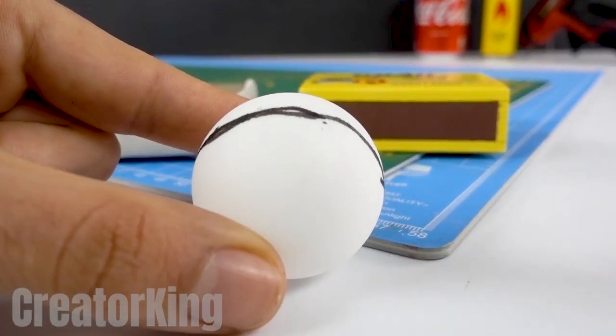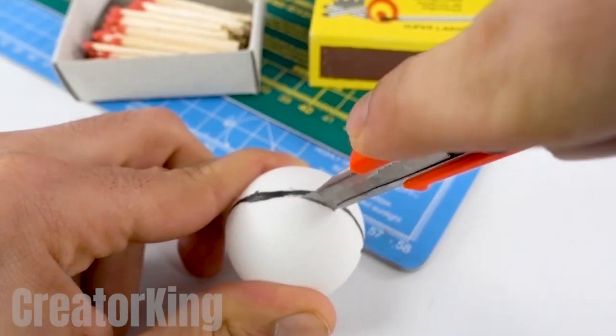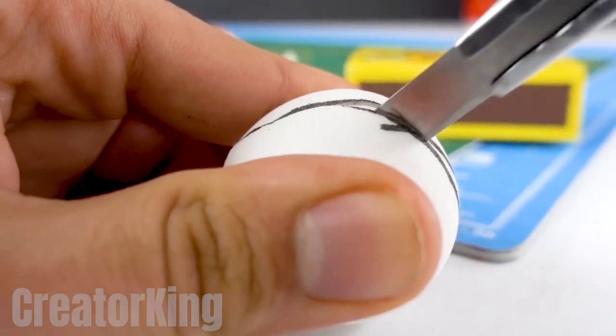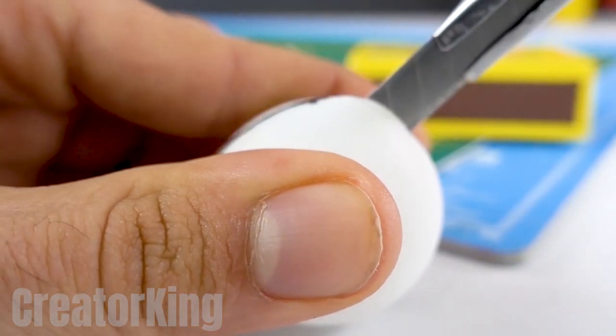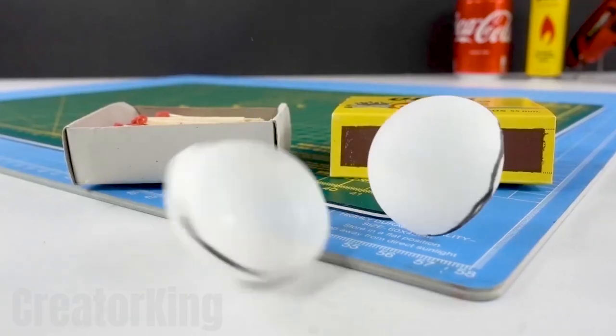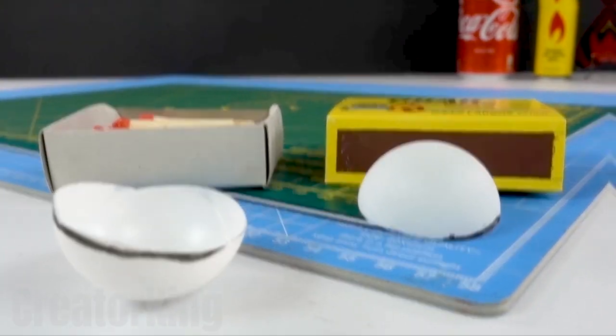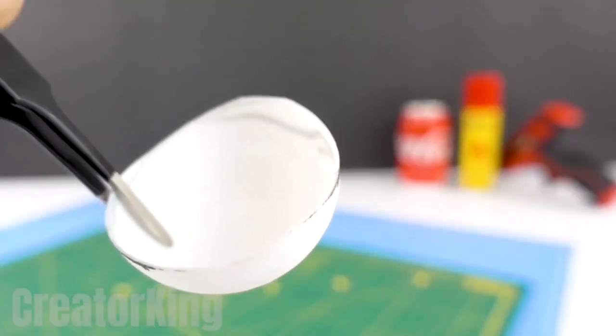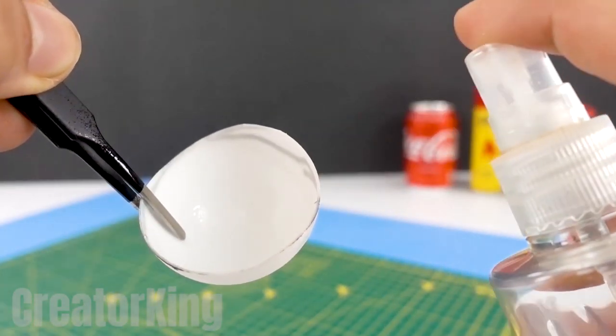For the next step, take a sharp box cutter and cut the ball along the line as shown on the screen. Be very careful not to cut your fingers. Once cut in half, clean them with a bit of soapy spray and a napkin to erase the marks made previously.